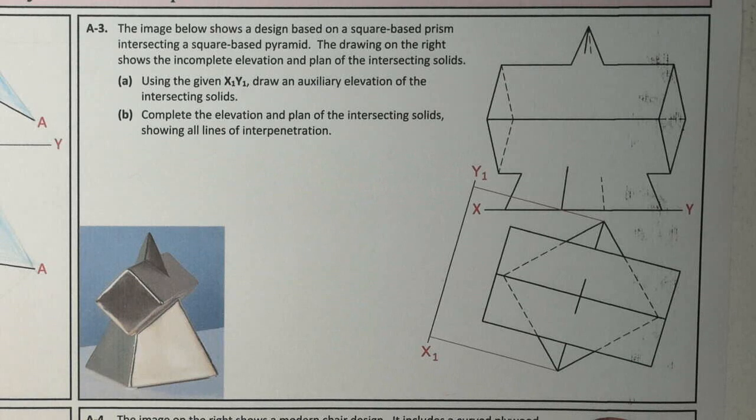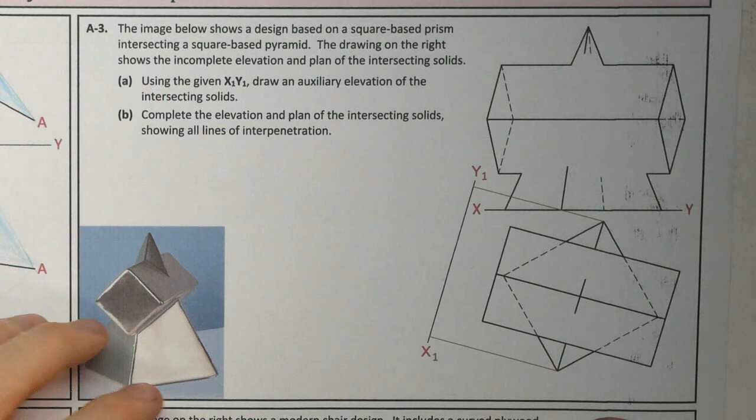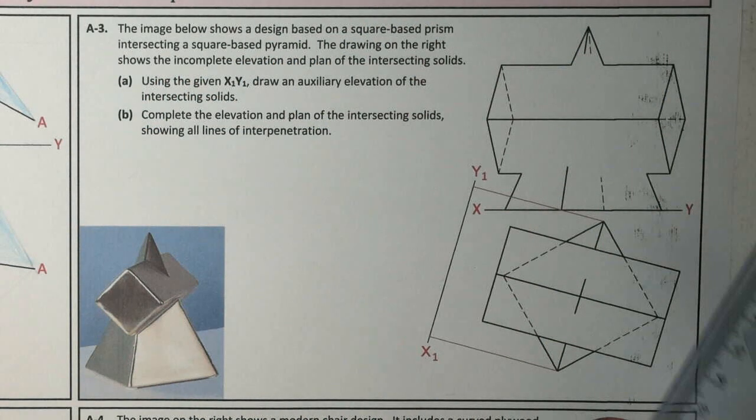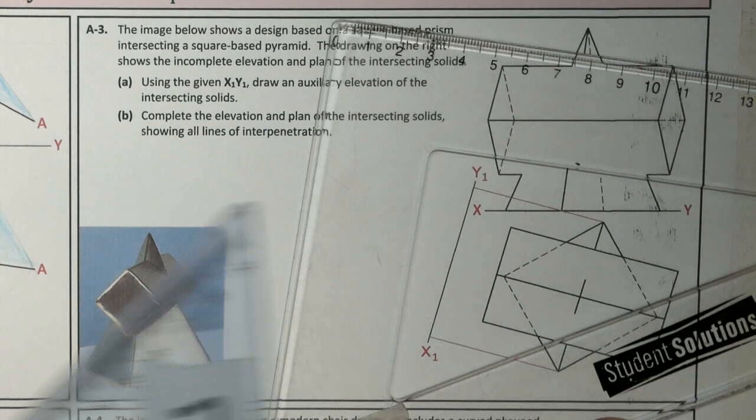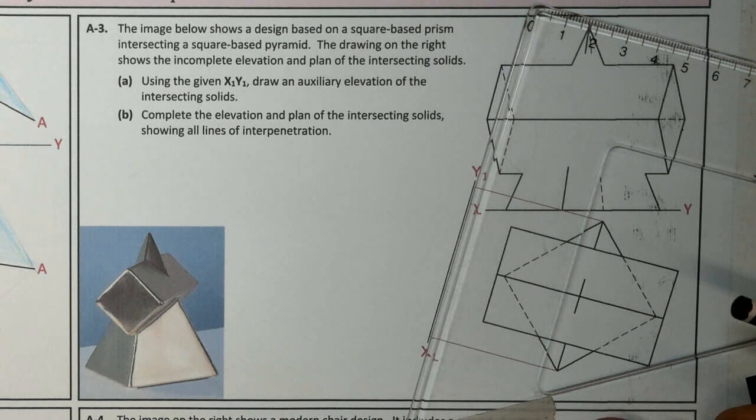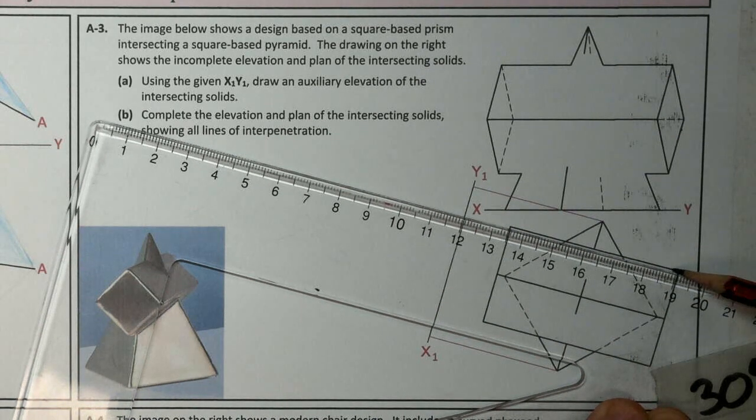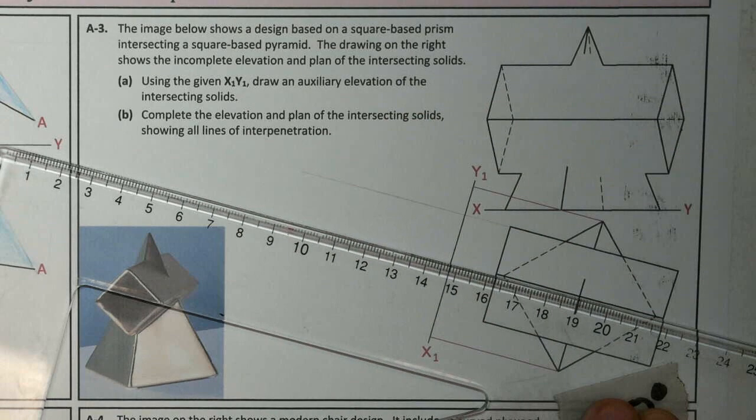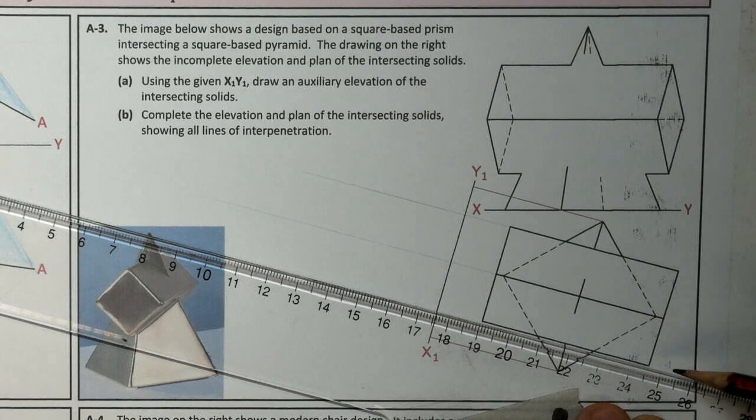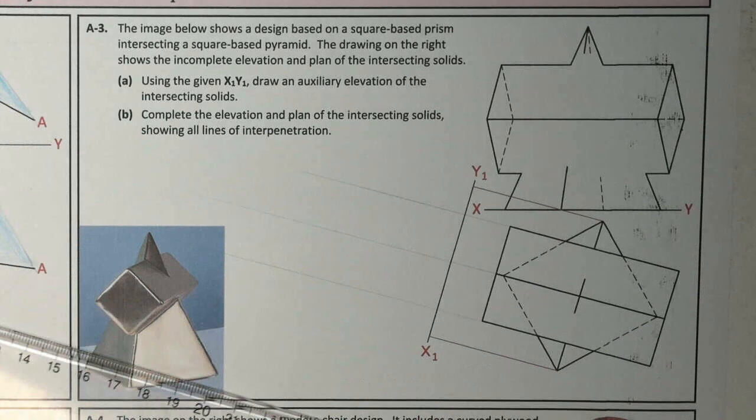They've given us a head start indicating just where they want the auxiliary elevation. We're going to project out from our plan to find our auxiliary elevation, taking our heights from our elevation. So we're going to slide this side squares, line off my X1, Y1, and project out all of these edges.